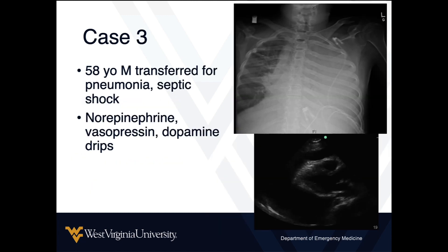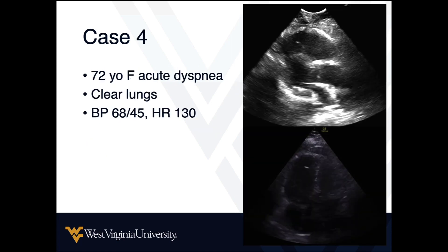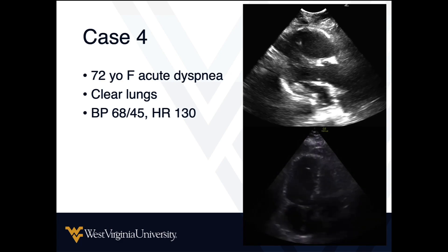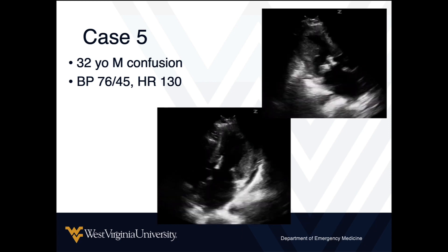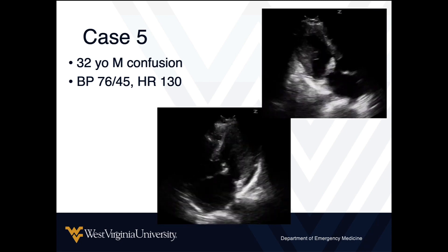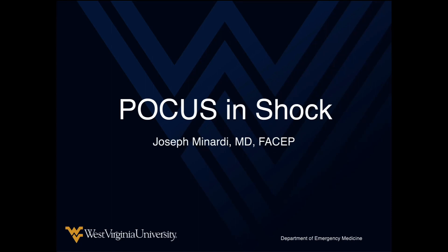A 58-year-old male transferred in for pneumonia and septic shock is on three pressors and still hypotensive — ultrasound may help guide more specific management. Then a 72-year-old female with acute shortness of breath, hypotension at 68 over 45, and clear lungs but significant tachycardia. Finally, a younger patient with confusion, hypotension, and heart rate of 130 with limited history — ultrasound can help differentiate these cases and provide clues about what's going on with each patient.